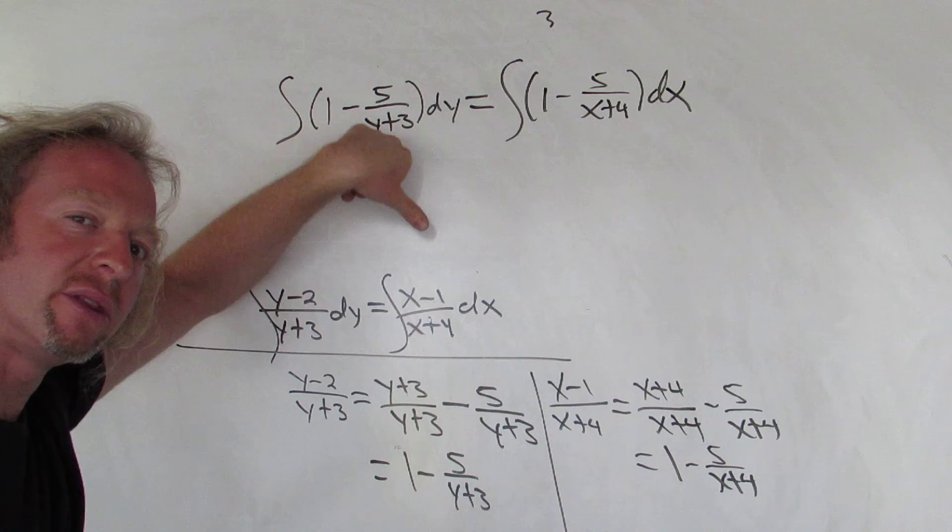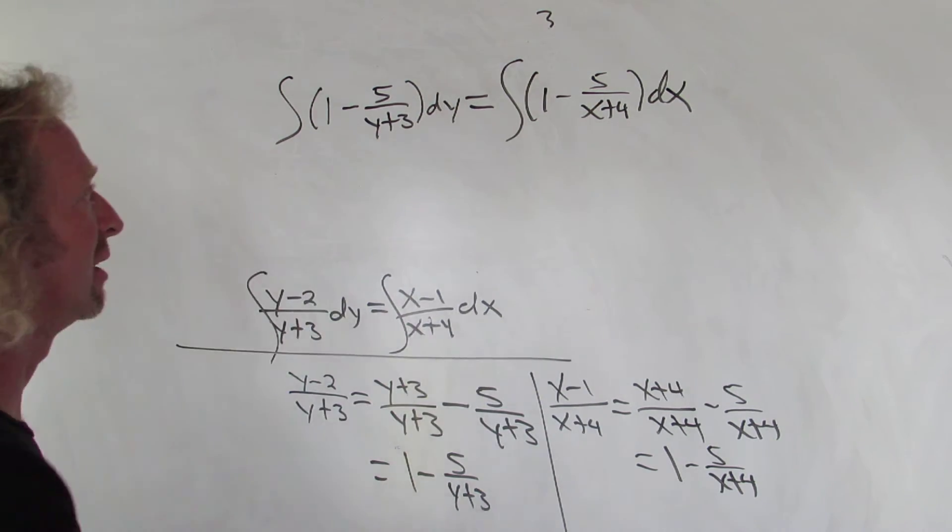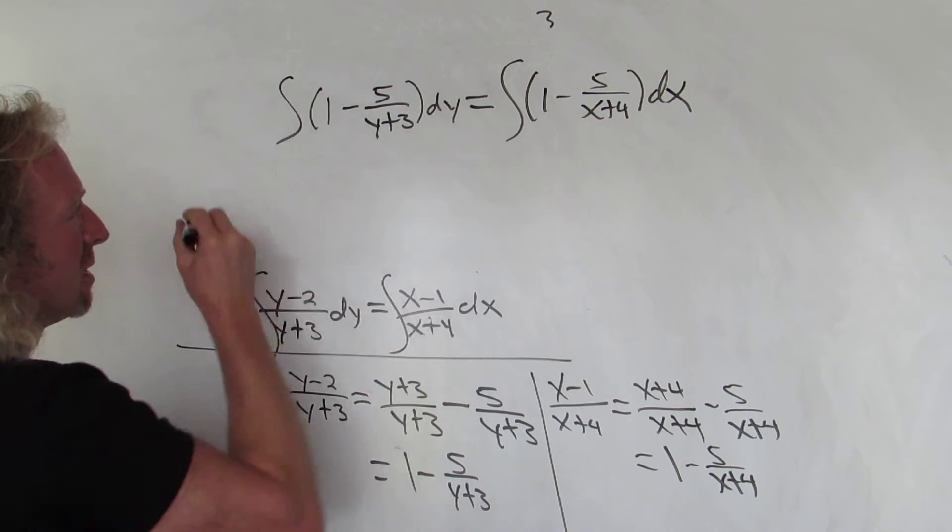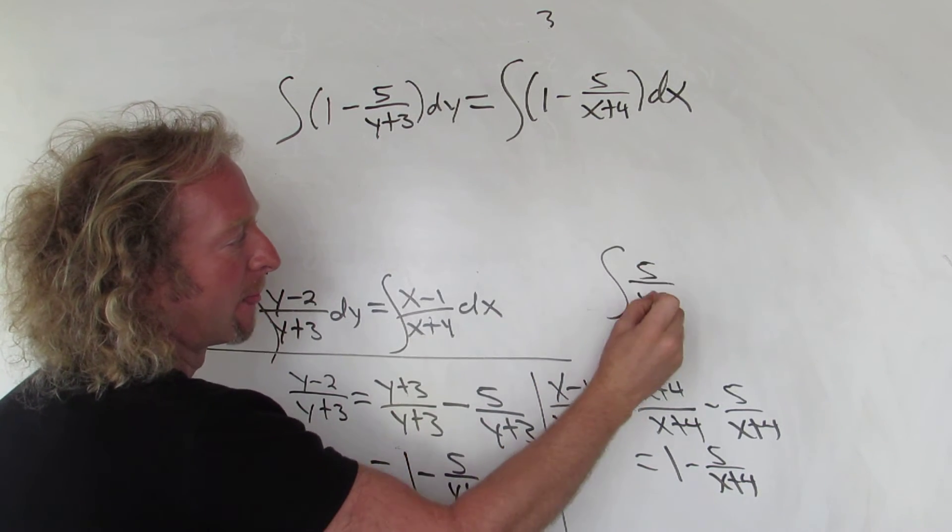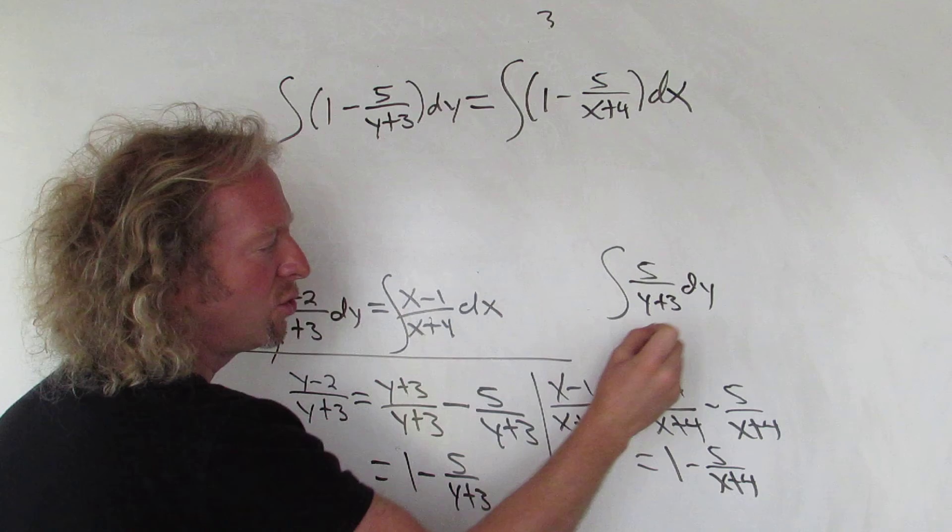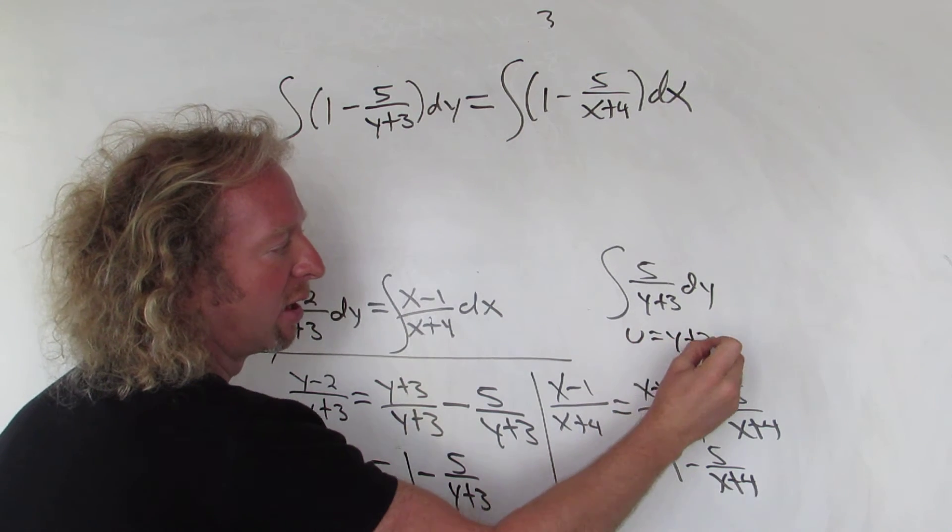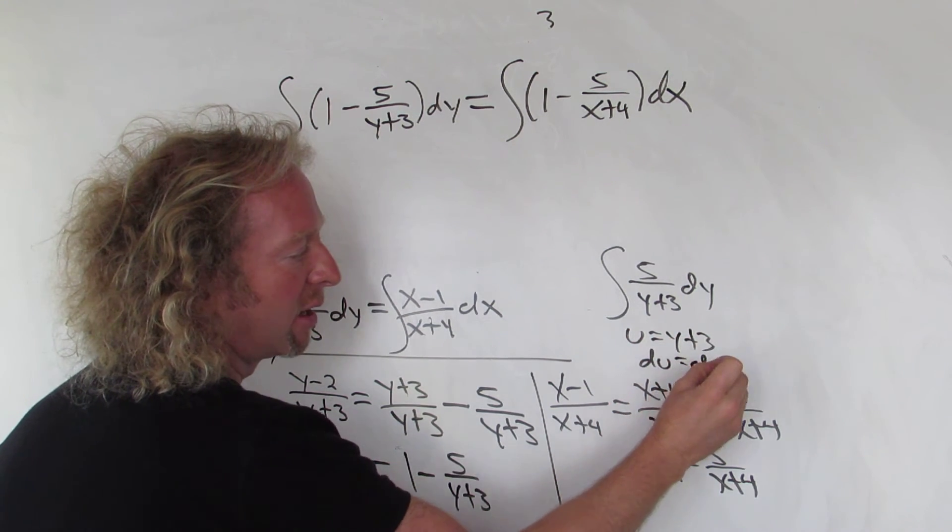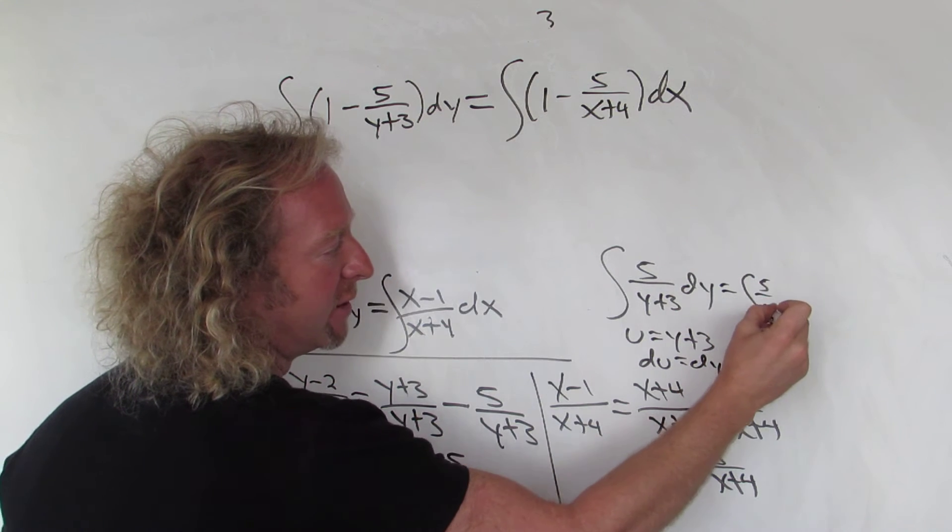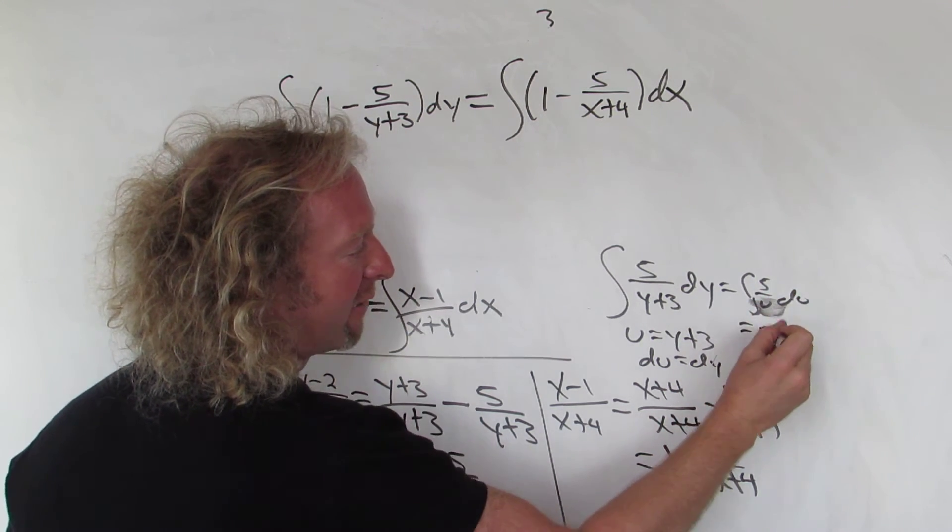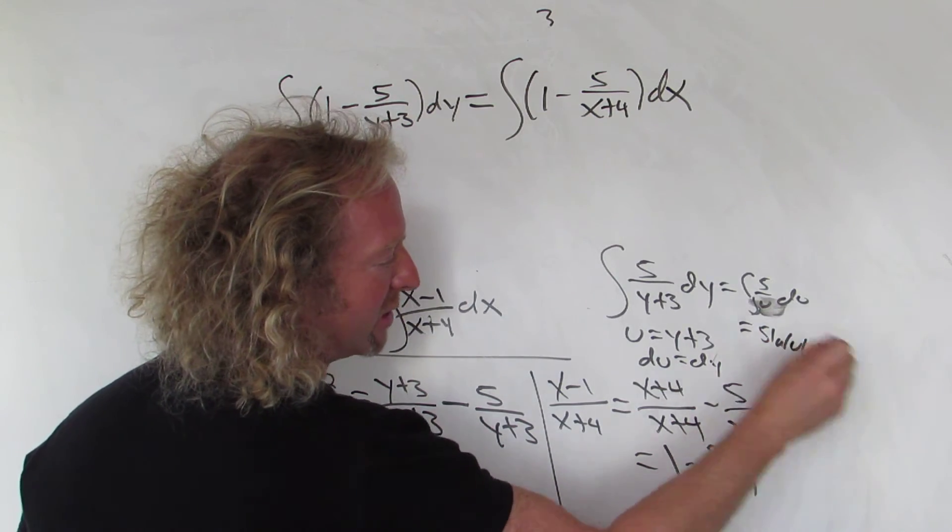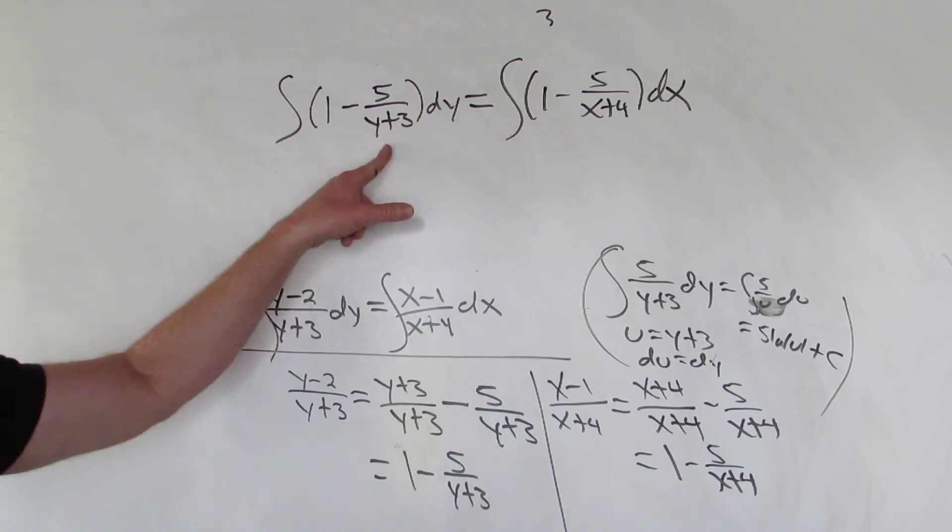This is a piece of cake to integrate. This is just going to get y. When you integrate this you just do a u-sub. It's pretty easy, almost not worth writing, but I'll write it. You would just let u be y+3, so du is dy. So you get 5 du over u, which is 5 ln|u| plus c.